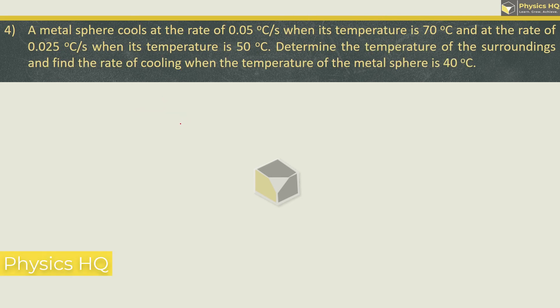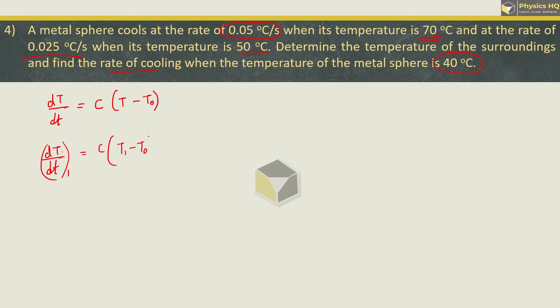Next, a metal sphere cools at the rate of 0.05 degree Celsius per second when the temperature is 70, and at the rate of 0.025 degree Celsius per second when the temperature is 50. Determine the temperature of the surrounding and find the rate of cooling when the temperature of the metal sphere is 40. Remember this formula: this rate of cooling is equal to C into current temperature minus the temperature of the surrounding. T0 is surrounding temperature. In the first case, dT upon dt1 equals C times T1 minus T0. And in the second case, we can write the second rate of cooling is C times T2 minus T0.